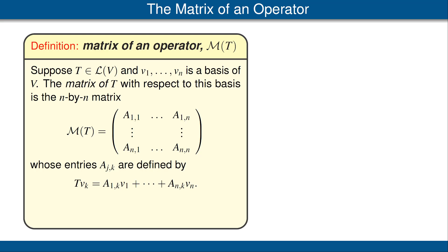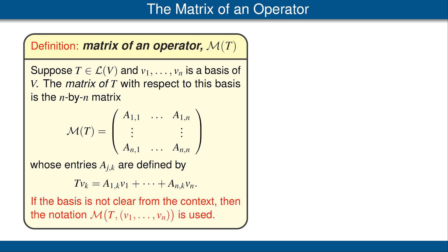Thus, if we have a basis v1 up to vn of V, the matrix of T with respect to that basis is the n-by-n matrix determined as follows. For each k, we write T of vk as a linear combination of the basis vectors. Then we make the coefficients of that linear combination into the k-th column of our matrix. If the basis v1 up to vn is not clear from the context, then we can write it in the notation as shown in the last line here. However, usually we can write just M.